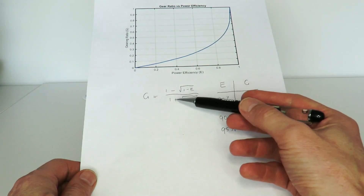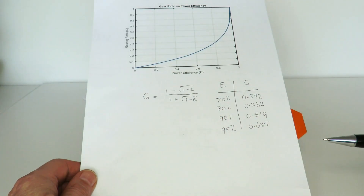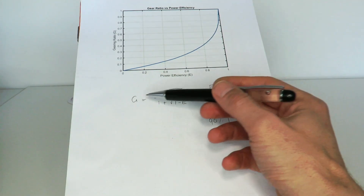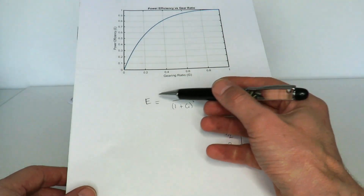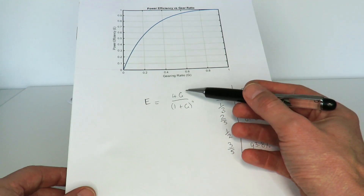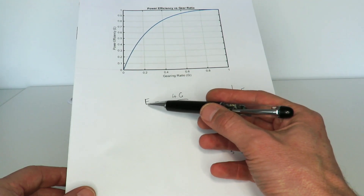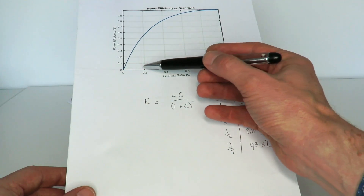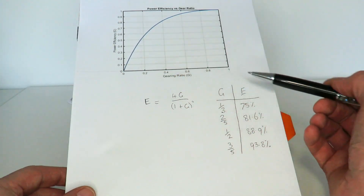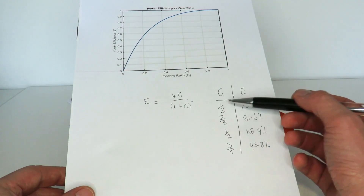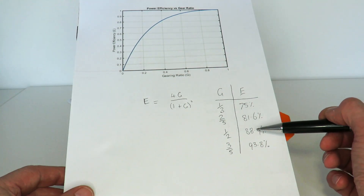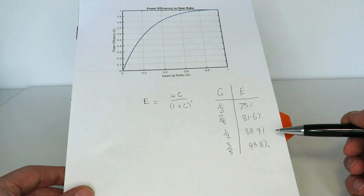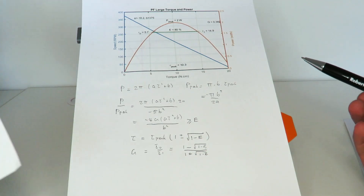The optimal gearing ratio is independent of the motor type — it doesn't depend on variables a and b. If you want efficiency in terms of g, you can invert the equation to get e as a function of g. For example, a gearing ratio of one-third gives an efficiency of 75 percent, two-fifths gives 81.6 percent, one-half gives 88.9 percent, and three-fifths gives 93.8 percent.